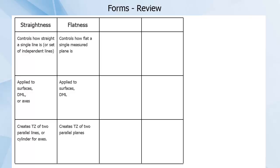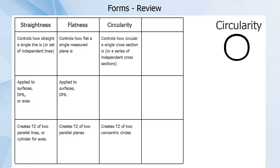The third symbol was circularity, which creates a TZ of two concentric circles. Similar to straightness, circularity only controls for cross-sections of a part independent of each other.